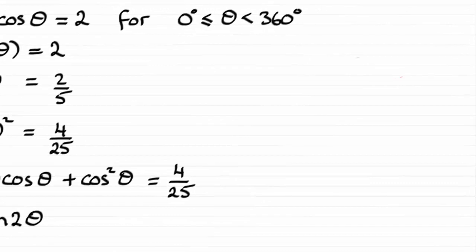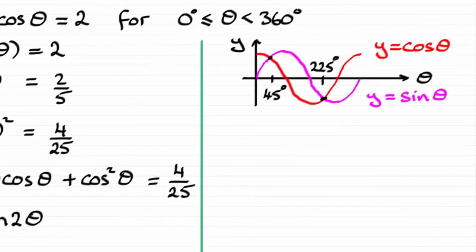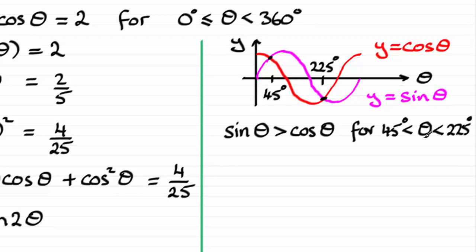Just to show you further, if we were to take the graphs of y = cosθ illustrated in red here, and y = sinθ. You'll notice that they intersect at 45° and 225° between 0 and 360°. And sinθ is greater than cosθ between 45° and 225°. I've got it summarized here.